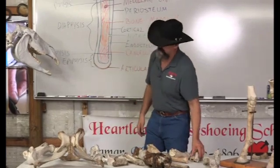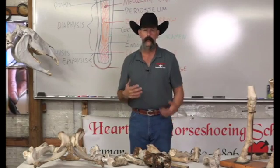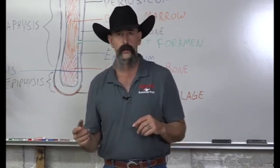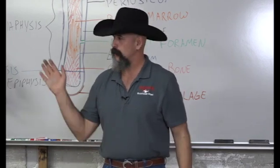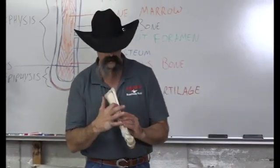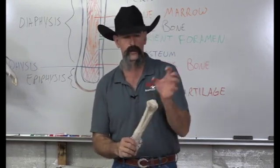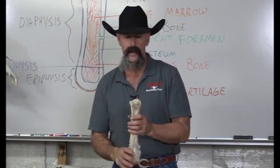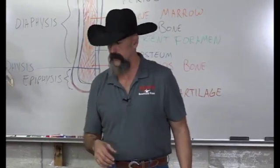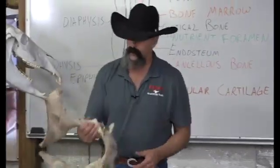Now let's talk about joints. There are three main kinds we're interested in. Anytime a bone touches another bone we have a joint. Between vertebrae are cartilaginous joints. Where splint bones meet the cannon bone are ligamentous joints. The ones we're really interested in are synovial joints, which are surrounded by a joint capsule or capsular ligament, have articular cartilage on both bone ends, and synovial fluid on the inside.